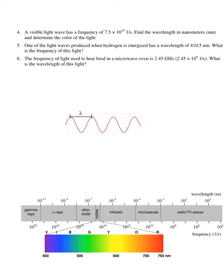There are a couple of characteristics of a wave. One of them is wavelength, which is given the Greek symbol lambda. Essentially, wavelength is the distance from one peak to another peak of the wave, as depicted here.